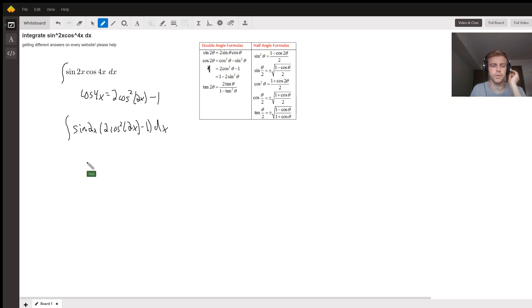Now the reason I do this is because if I choose u to be cos(2x), I can turn this into 2u² minus 1, and I know I'm going to be able to cancel the sine because the derivative of cosine is sine. That's why I chose to use this cosine squared function, because it was going to allow me to use a u-substitution to get to my answer.